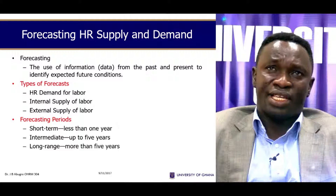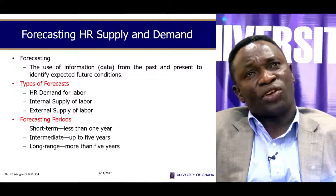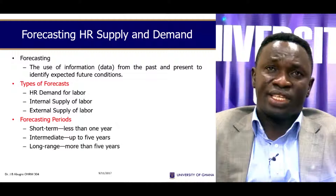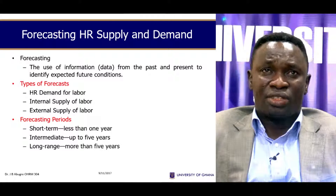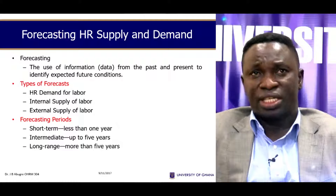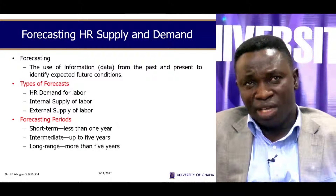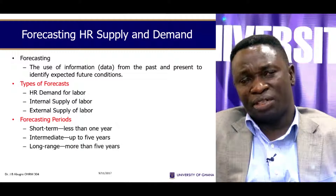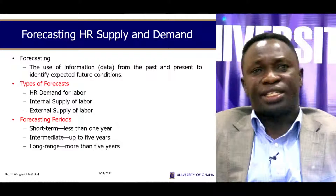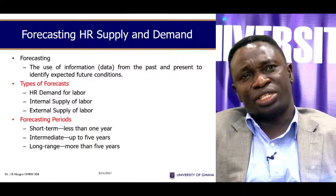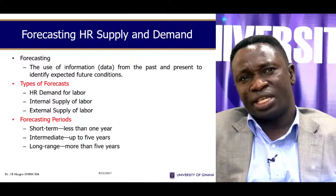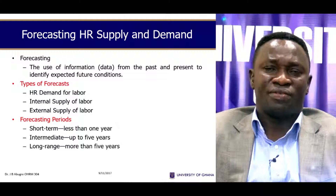Forecasting human resource supply and demand. What is forecasting? It is the use of information — data from the past and present — to identify expected future conditions. Types of forecasting include: HR demand for labor, internal supply of labor, and external supply of labor. Forecasting periods: there are three main periods — short term, that is less than one year; intermediate, up to five years; and long range, more than five years.